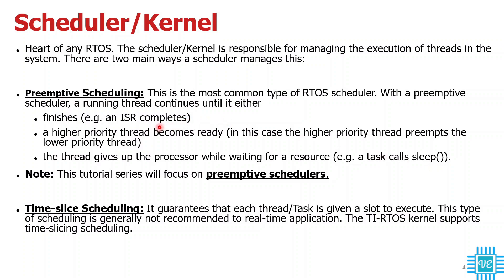You can use sleep to wait for a particular resource. Sometimes a task may depend on the outcome of another task, and with the help of the kernel, you can wait until you get the resource from that other task. For this entire series of video tutorials, I'm going to focus only on preemptive schedulers. After we finish with the series, I will also do one or two tutorials on time-slice scheduling. Time-slice scheduling guarantees each thread or task is given a slot to execute, but this type of scheduling is generally not recommended for real-time applications. The TI RTOS kernel does support this time-slicing scheduling algorithm.